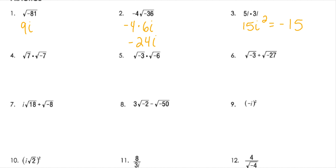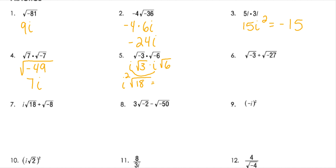For number 4, we've got two radicals. If I combine those, I get negative 49. The negative is i, and the square root of 49 is 7, so I can simplify that to 7i. For number 5, 3 and 6 are not perfect roots, so I'm going to take out the imaginary part and then combine when I can. i times i is i squared, and 6 times 3 is 18. So when I break that apart, I have i squared, and I can break 18 apart into 9 times 2. i squared is negative 1, the square root of 9 is 3, and then I'm left with the square root of 2.